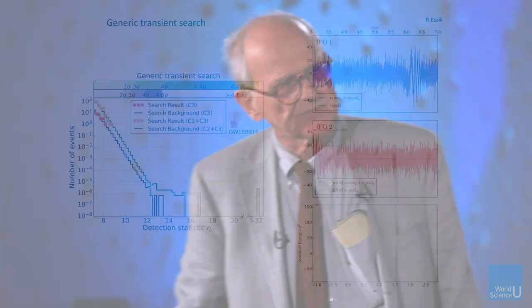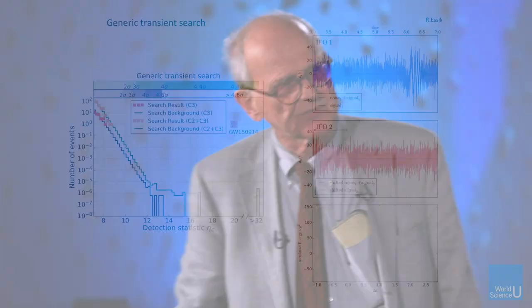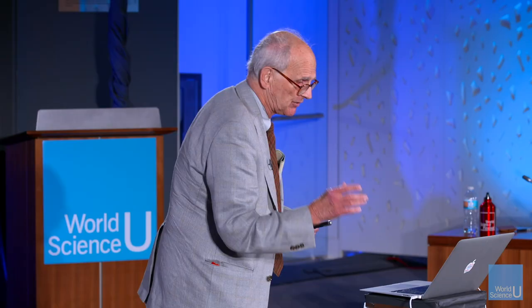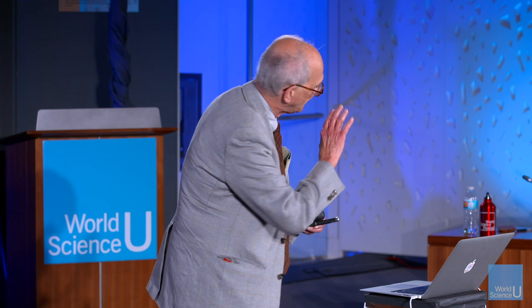Let me show you how we detected it. We did it two ways. We cross-correlated the two detectors — the Livingston detector with the Hanford detector. The cross-correlation product is shown on the right. You can see the signal: the red signal moves toward the blue one, and when they coincide you see a significant signal-to-noise improvement. With that alone you could tell we had a detection. That's not the best way, but already with that the detection was clear.